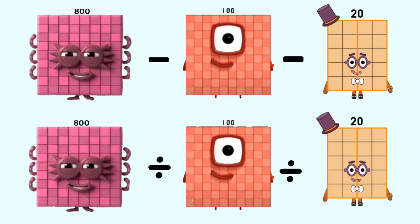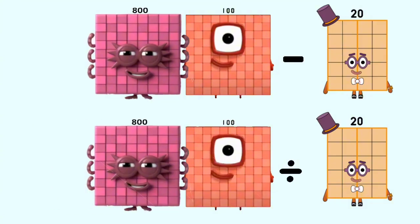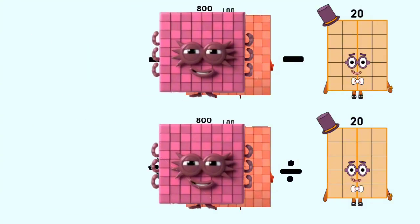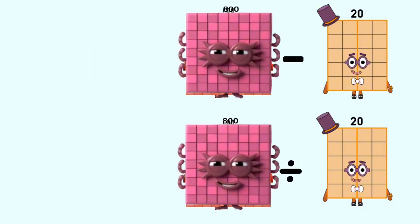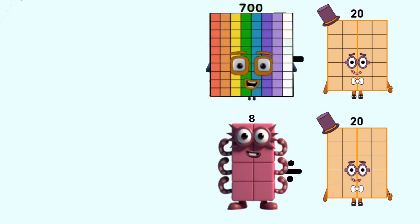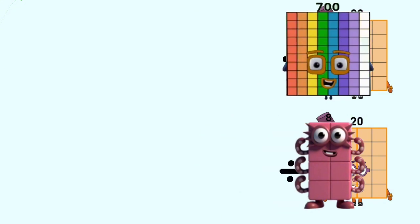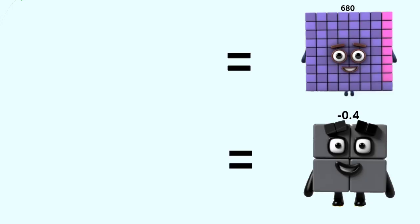Number blocks 800 minus 100 and divided by 20 equal 700 and 8. Number blocks 700 and 8 minus 20 and divided by 20 equal 680 and negative 0.4.